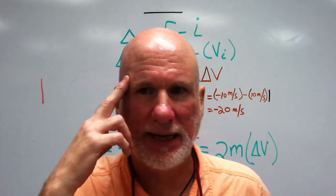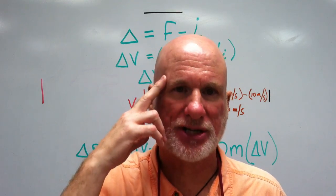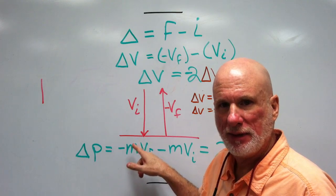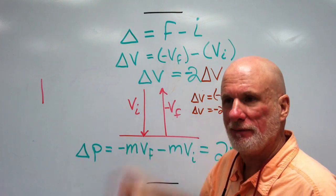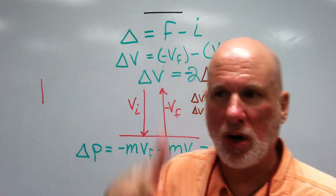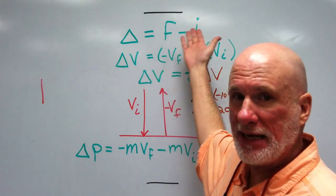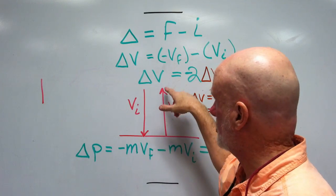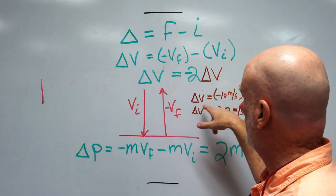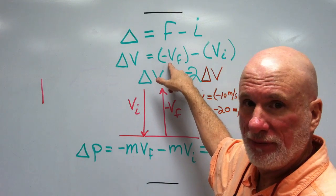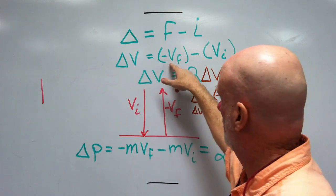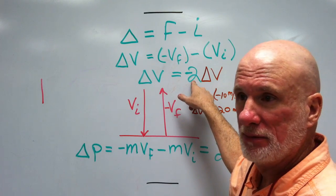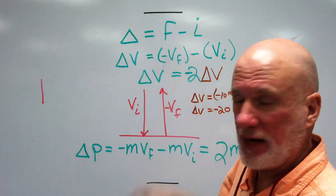Well, remember, V is a vector, so the direction's important. So, if it's positive V this way, it's negative V that way. Now, it's always final minus initial. So, if it's positive this way and negative this way, it'll be negative VF minus VI, which would be double the velocity, change in velocity.